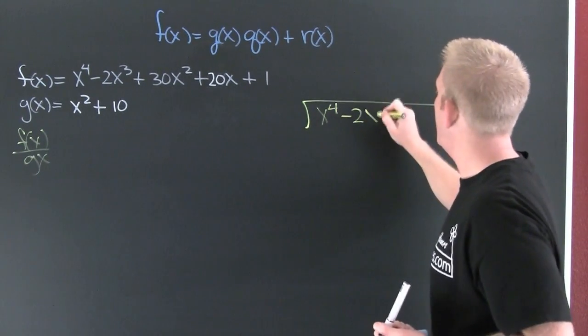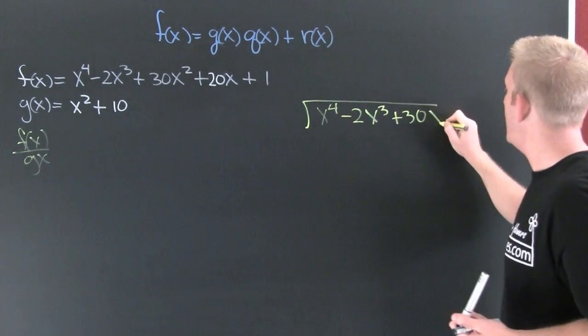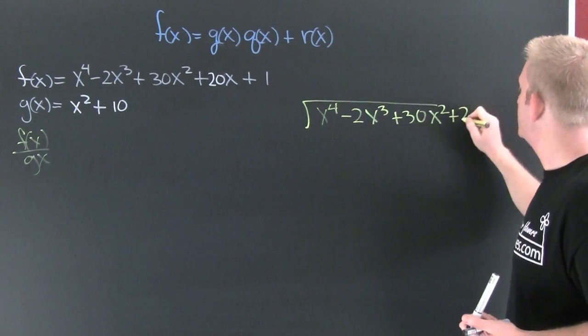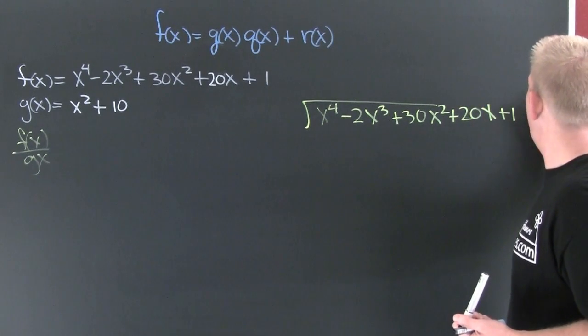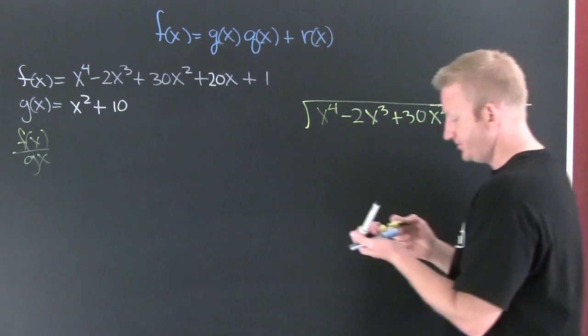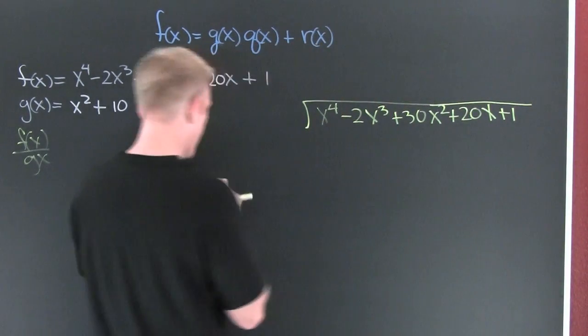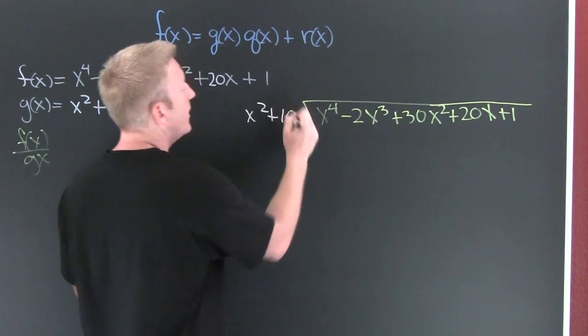So then on the inside I'm gonna have x to the fourth minus 2x to the third plus 30... x squared plus 20x plus 1. Looks like we're gonna have to make our house a little bit bigger. And then outside the house I'm gonna put g(x): x squared plus 10.